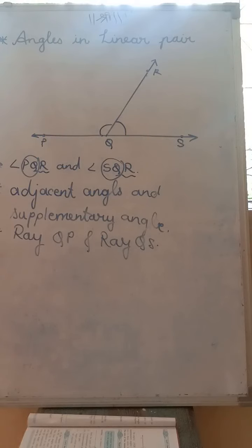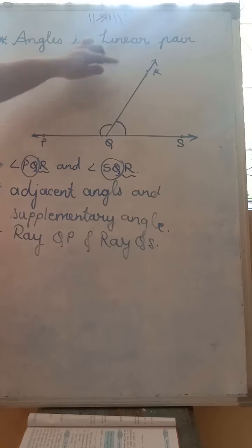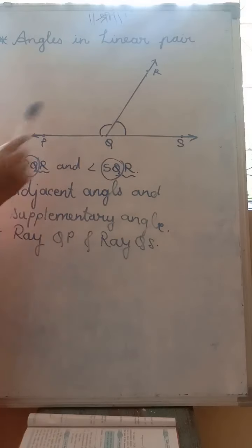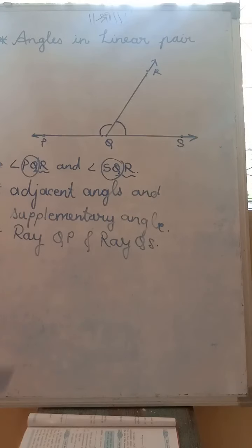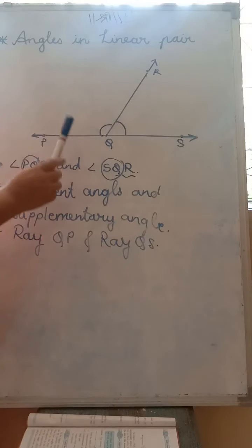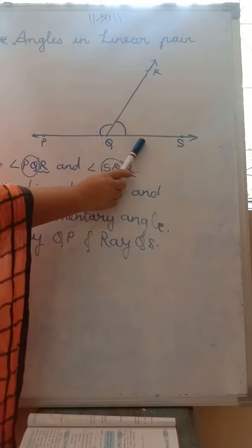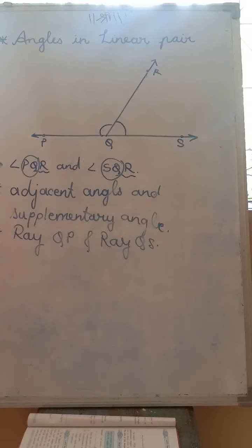So what we are learning now is angles in linear pair. The angle PQR and angle RQS in the figure are adjacent angles and also supplementary angles. They are having a common arm, but the arms which are not common are forming a pair of opposite rays.